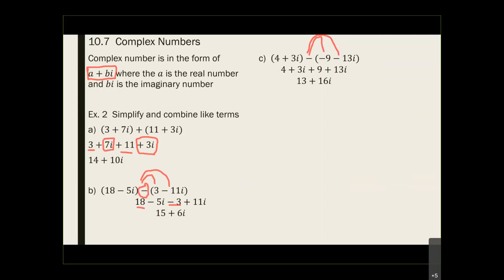So hopefully you say, 'Oh, Mr. Tran, I like this. This is easy.' And yes, this is all there is. The i is new, but the step — combining like terms — is not new. Any question with how to combine or how to simplify your complex number?